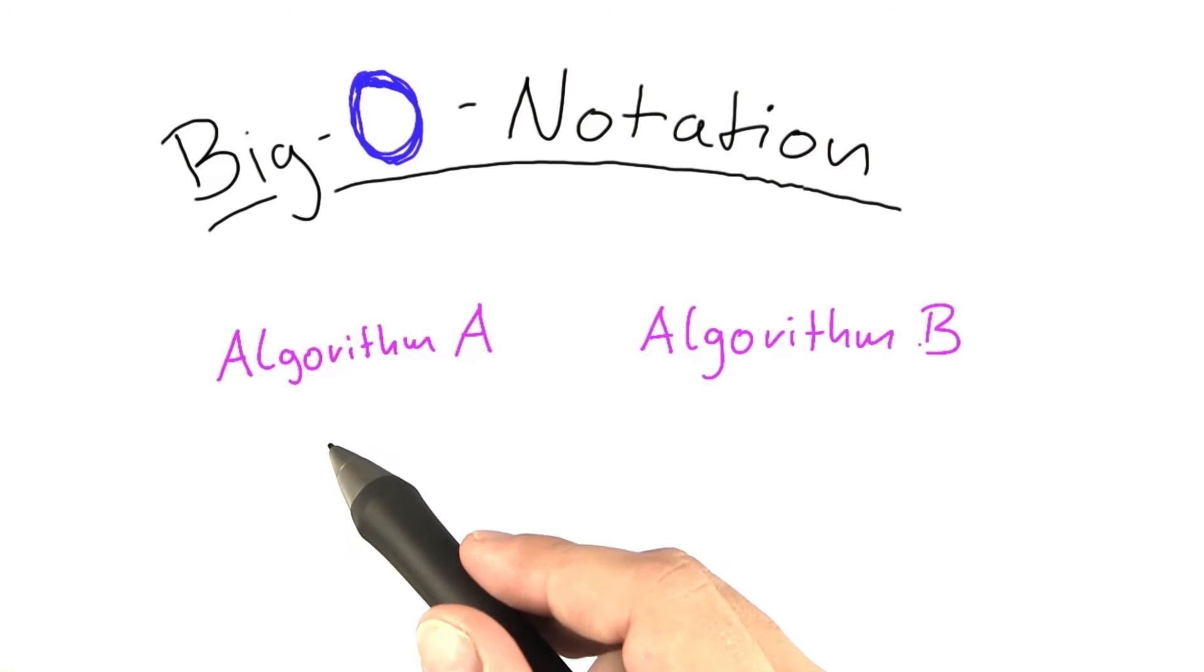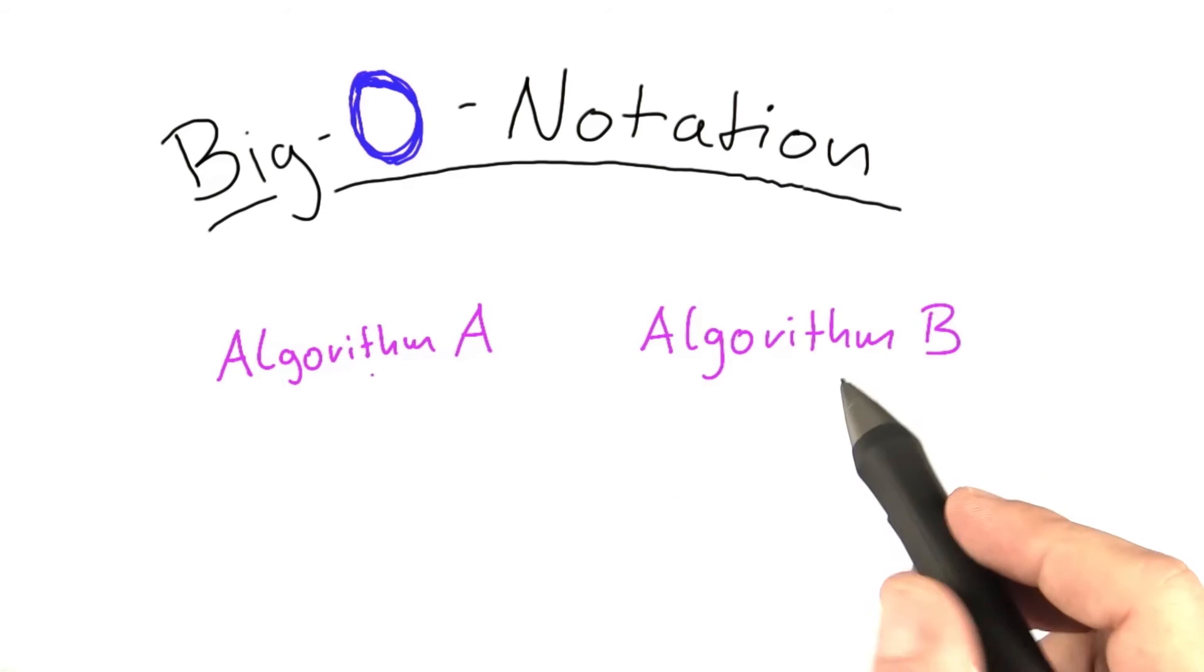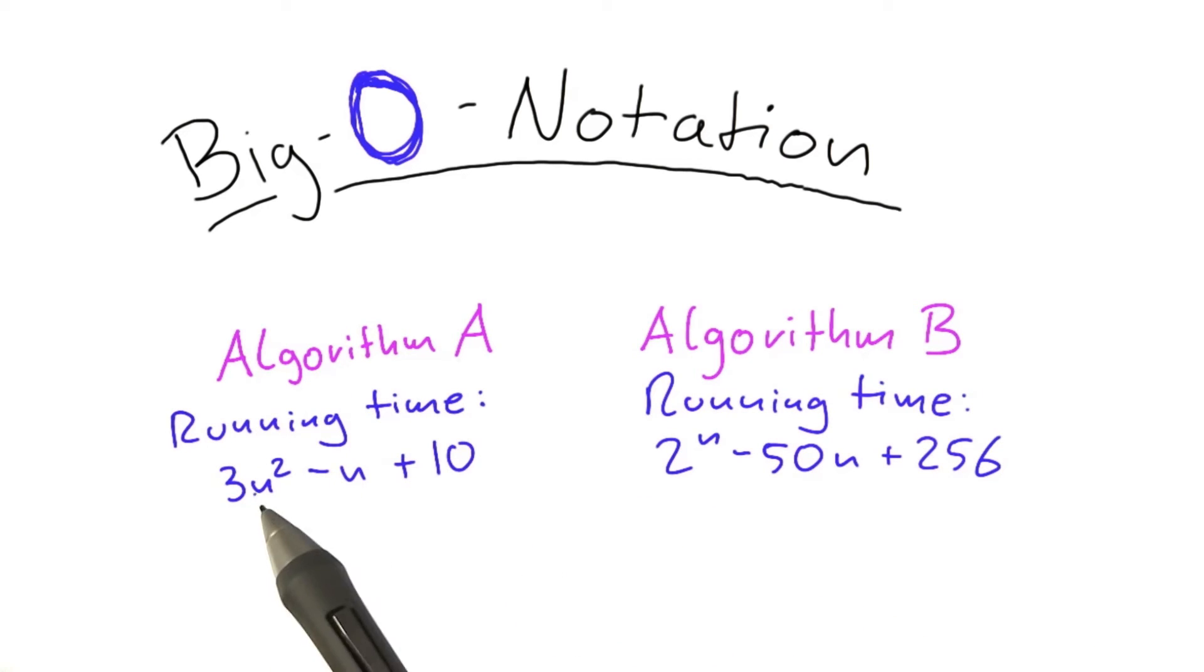So let's say we have two algorithms, Algorithm A and Algorithm B, and Algorithm A has a running time of 3n squared minus n plus 10 for an input of size n, and Algorithm B has a running time of 2 to the power of n minus 50n plus 256.